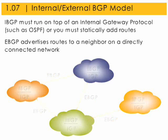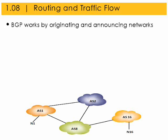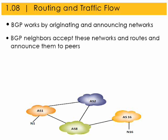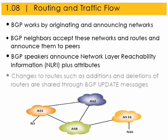BGP works by originating and announcing networks and routes. BGP neighbors then accept these networks and routes and announce them to peers, so the best routes to new networks are identified, stored, and shared. BGP speakers announce Network Layer Reachability Information (NLRIs) plus attributes, including route descriptions and additional information that affects the acceptance policy of the receiving router.